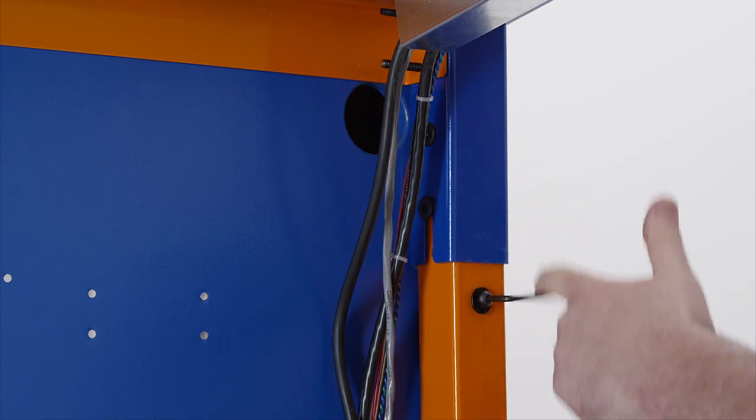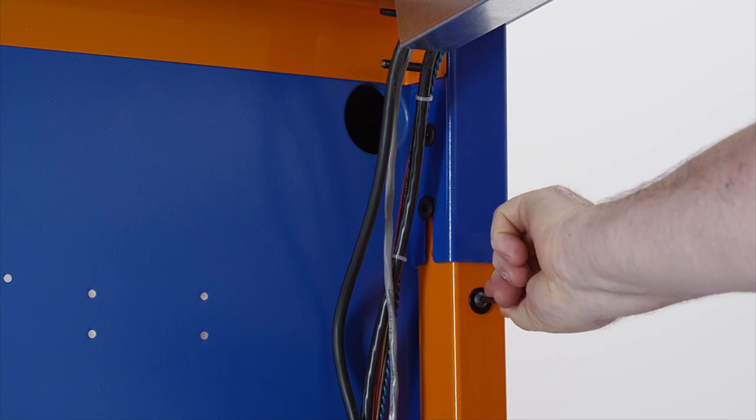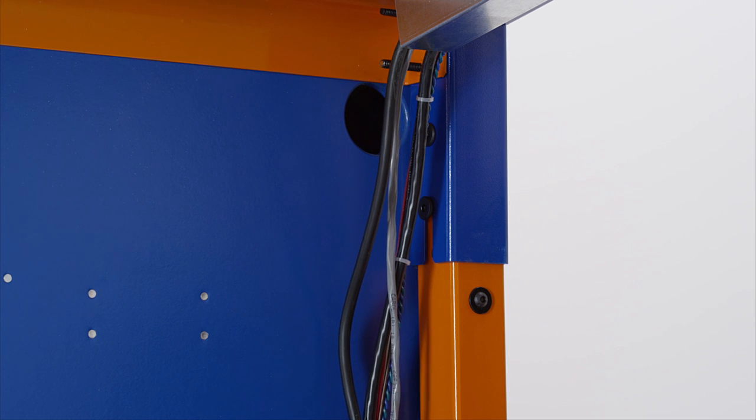With four quarter inch by 20 Allen bolts, secure the podium to the cabinet legs using a 5-32nd Allen wrench.